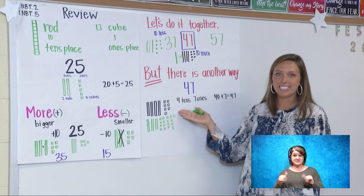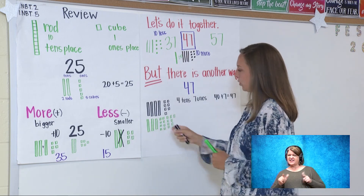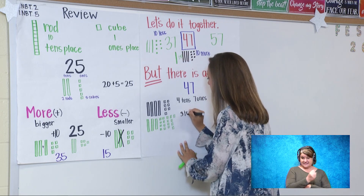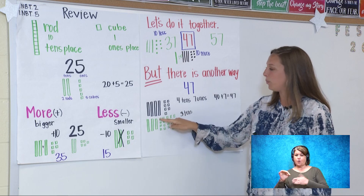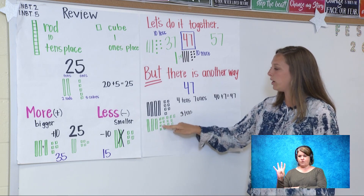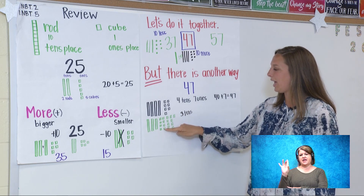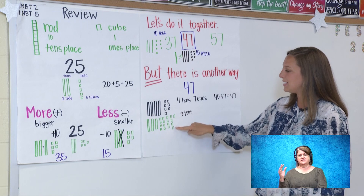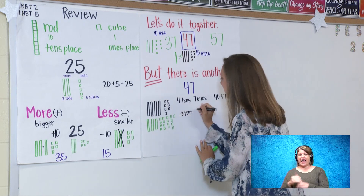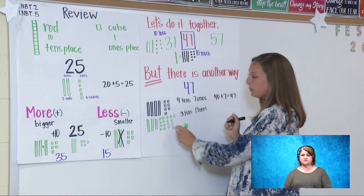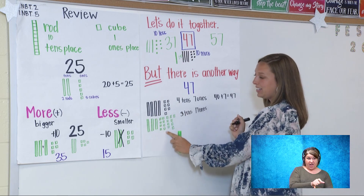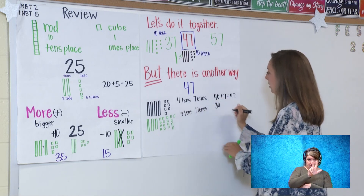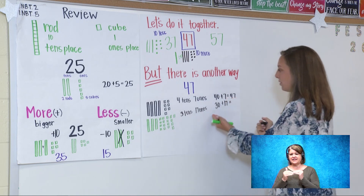I still have the number 47. It just looks differently. Let's count it out: 10, 20, 30. I have three tens now. Then counting the ones: 1 through 17. I have 17 ones. Remember because I broke this one rod that has 10 into individual cubes. So now we have three tens: 30 plus 17 equals 47.